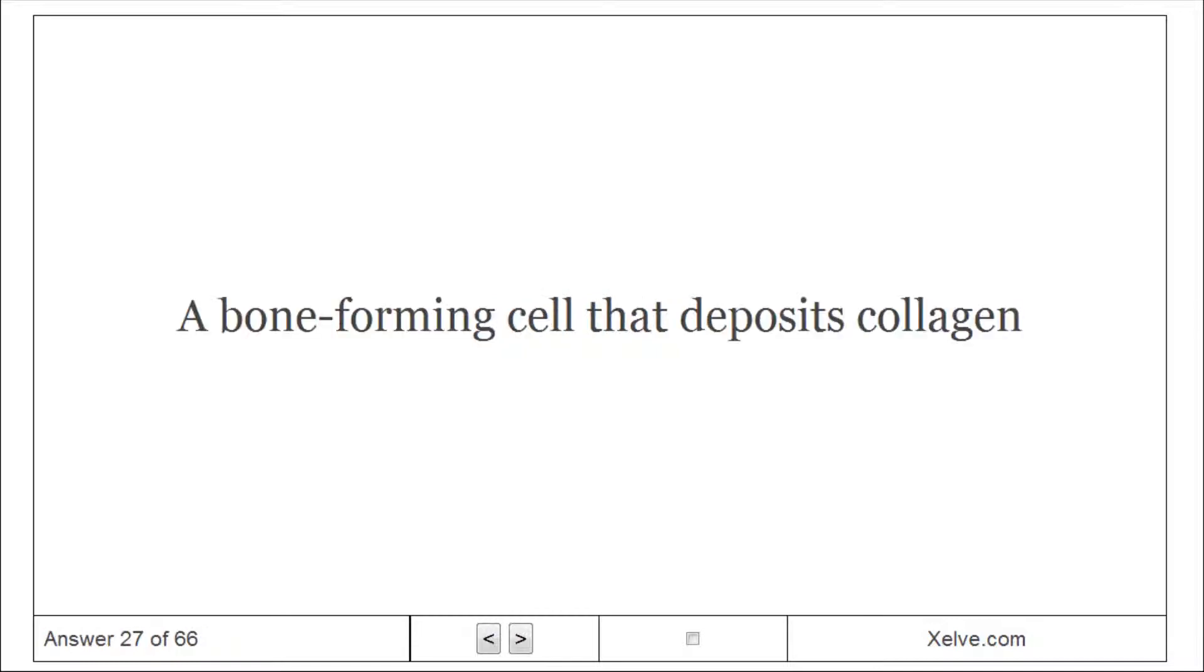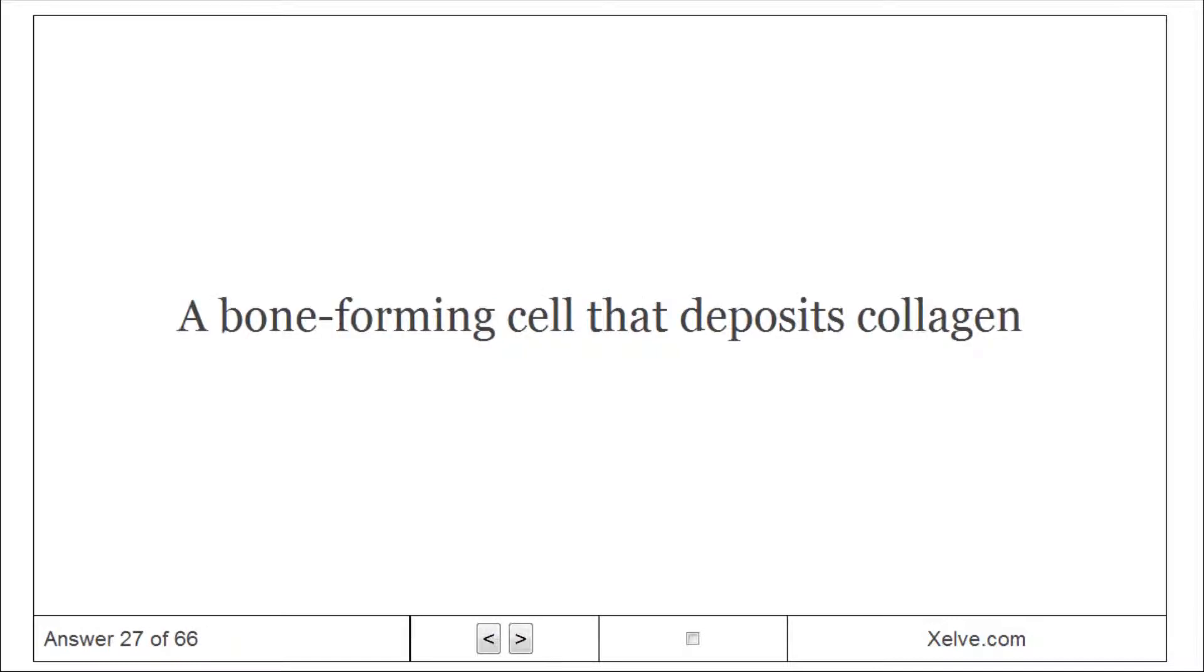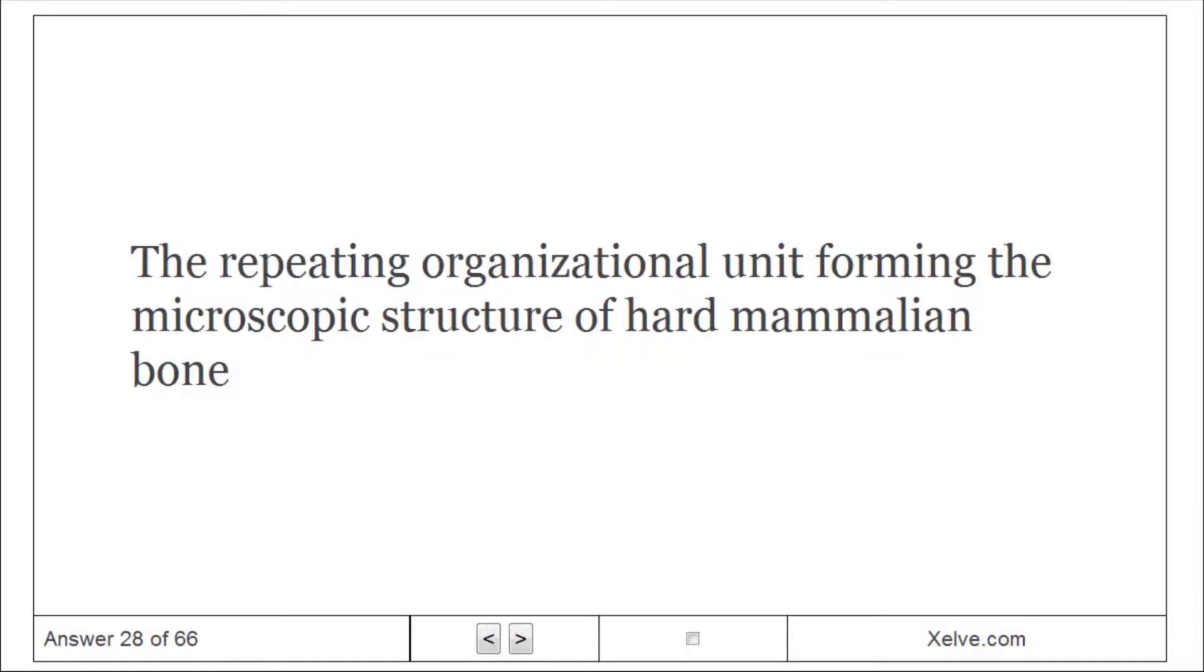Osteoblast: A bone-forming cell that deposits collagen. Osteon: The repeating organizational unit forming the microscopic structure of hard mammalian bone.